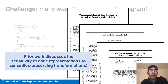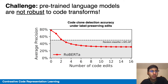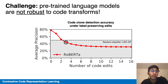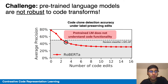Prior work finds that learned models for code are very sensitive to semantics-preserving transformations similar to these. We also find that RoBERTa, when pre-trained on code, does well in the natural code setting, achieving close to 80% average precision. However, in an adversarial setting where there are up to three adversarial code perturbations, accuracy drops to worse than random guessing. This indicates that the pre-trained language model doesn't understand code functionality, because the resulting programs have the exact same functionality and the same label.